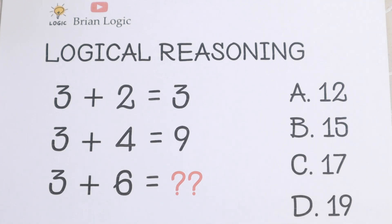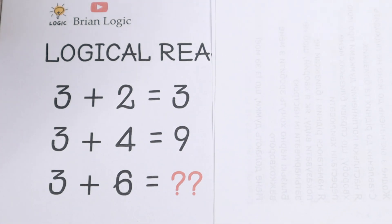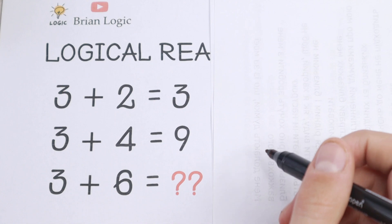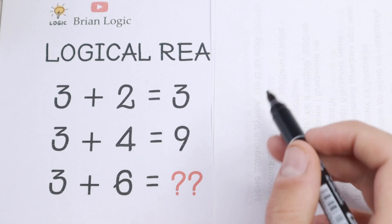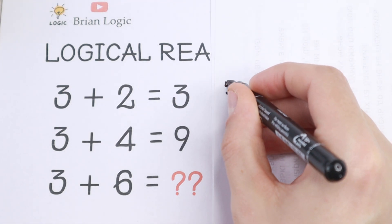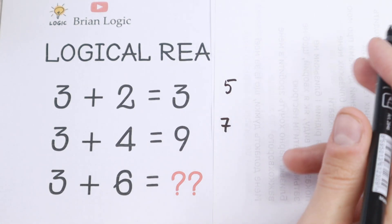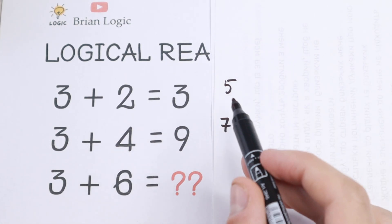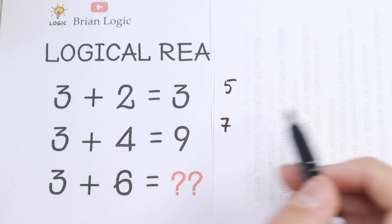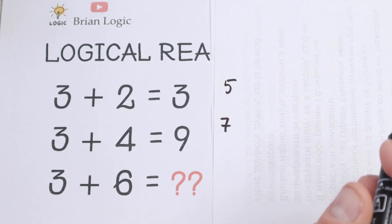So let's solve it right now. First of all, 3 plus 2 equal to 3 is of course incorrect arithmetically, because 3 plus 2 equals 5, and 3 plus 4 equals 7. So there is no straightforward pattern between 5 and 7 and the given results of 3 and 9.